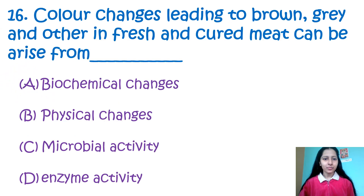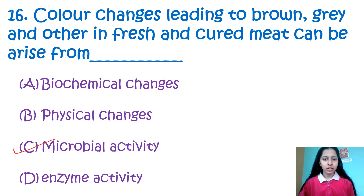Question 16: Color changes leading to brown, grey and others in fresh and cured meat can arise from biochemical changes, physical changes, microbial activities, or enzymatic activity. The color changes in meat are due to microbial activity, that is option C.